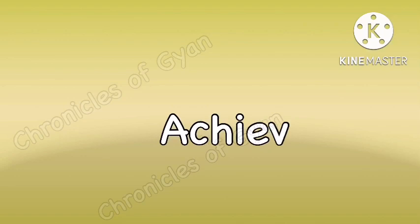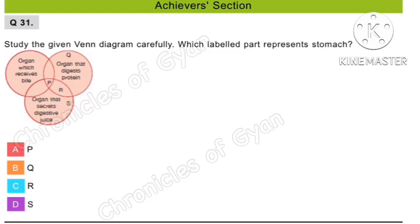Question 31. Study the given Venn diagram carefully. Which labeled part represents the stomach? In the Venn diagram, R is the stomach — the organ that digests protein as well as the organ that secretes digestive juice.